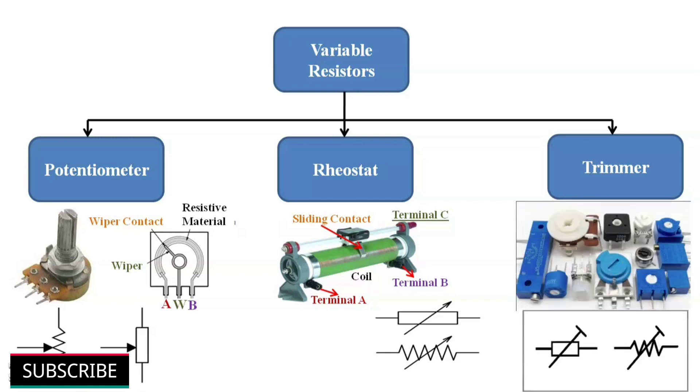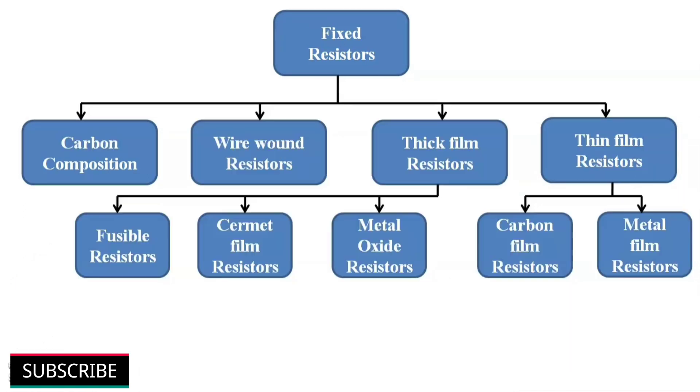Third one, trimmers. In short, they are called as trim pot. The value of the resistance can be changed by turning the position of the screw with the help of a small screwdriver. These are small variable resistors used for tuning and calibration.